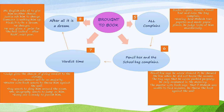Even the judge is ready to punish him. But Miss English, one of the most important people — like an angel — gives him another chance. Justice asks him to change. Someone is waking up, angry, and then finds it all to be a dream. He was later given a prize for the best looked-after book. The moral of the story is that students should properly maintain and properly use their books.